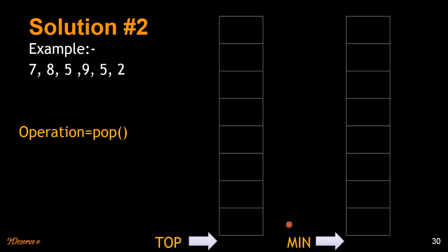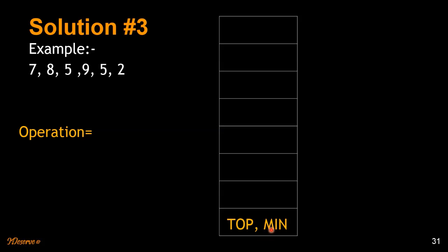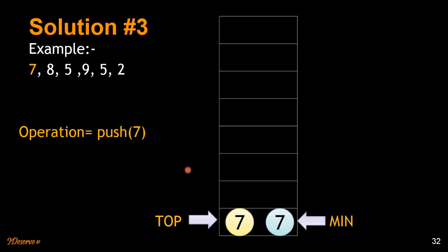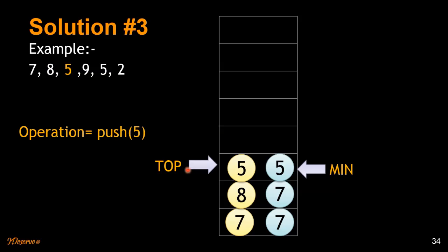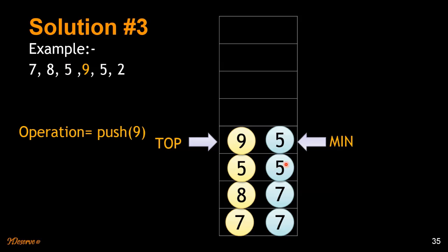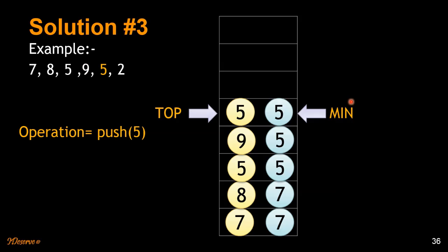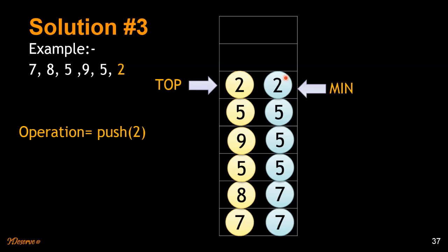That was solution 2. There is one more approach: we modify the node definition to keep both the value of the element and the minimum at that point. When we push 7, minimum is also 7. When we push 8, 7 is still the minimum. Then we push 5 — 5 becomes the minimum. We push 9 — minimum is still 5. We push 5 again — minimum is still 5. Then we find 2, so we update the minimum to 2.